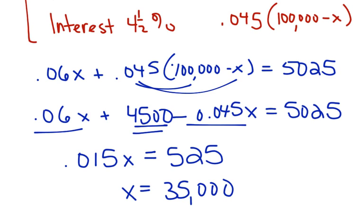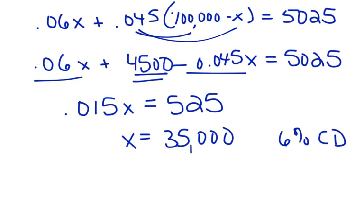Does that seem like a reasonable answer? Well, absolutely it does. So if she puts $35,000 into the 6% CD, then in order to find out how much money she put in the 4.5% CD, you subtract 35,000 from 100,000. And we're going to find out that she's going to put 65,000 in the 4.5% CD.